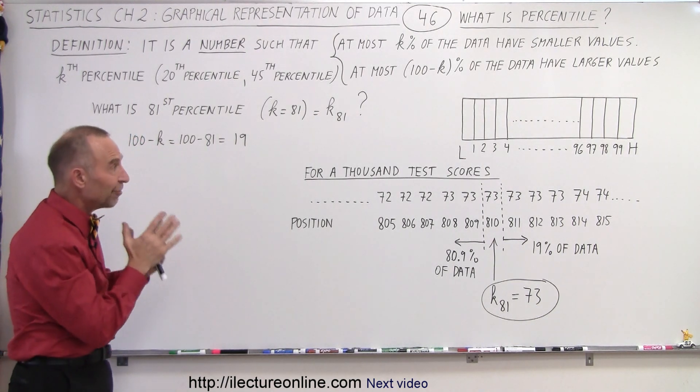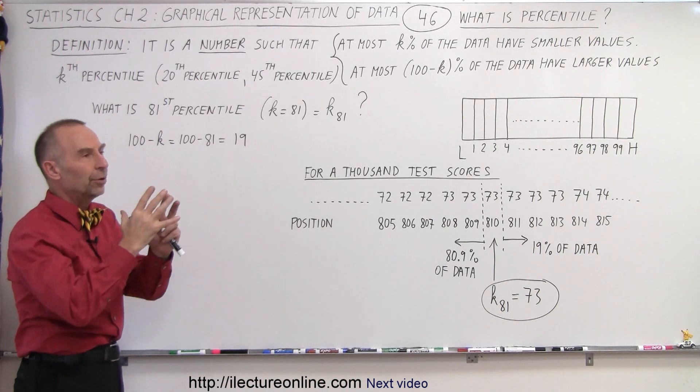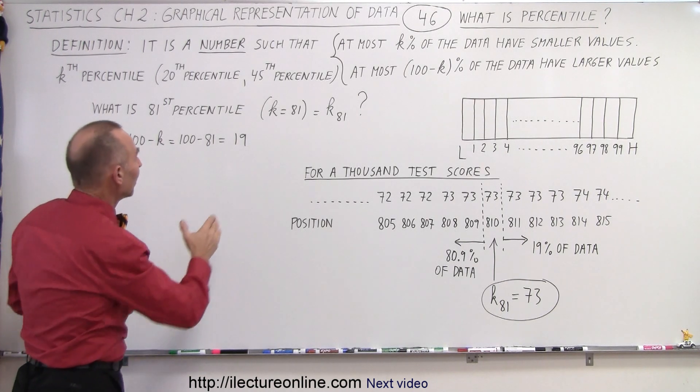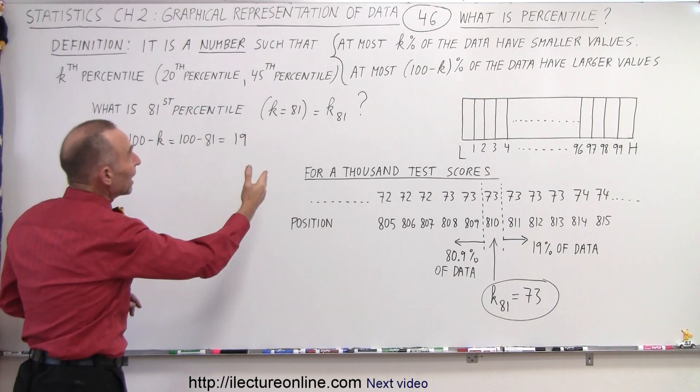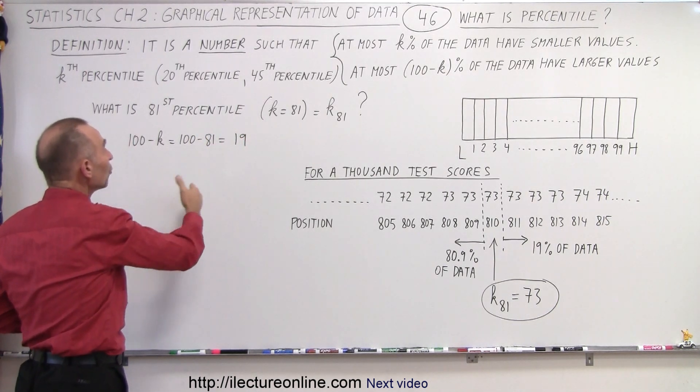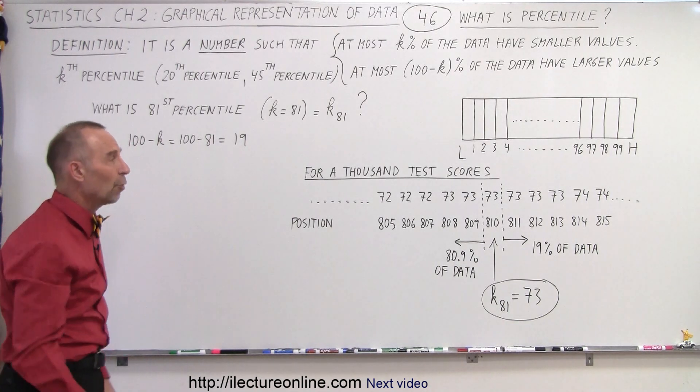In other words, we're trying to find a number such that at most 81% of the values have a smaller value, and at most 19% have a larger value than the number we're looking for.